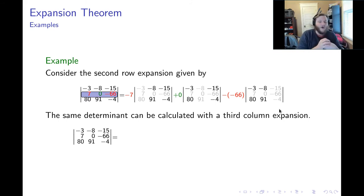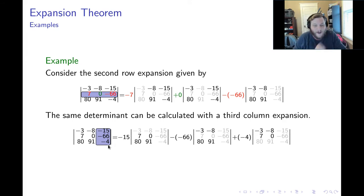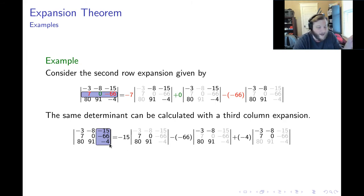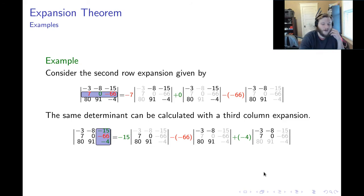We could take the same determinant using a third column expansion. The third column consists of negative 15, negative 66, and negative 4. Starting from the upper left, the signs go plus, minus, plus. So we scale negative 15 by plus 1, negative 66 by minus 1, and negative 4 by plus 1. We delete the appropriate rows and columns and add everything up to get our determinant. This illustrates that we have flexibility — whether we choose a second row or third column expansion, we always get the same answer.